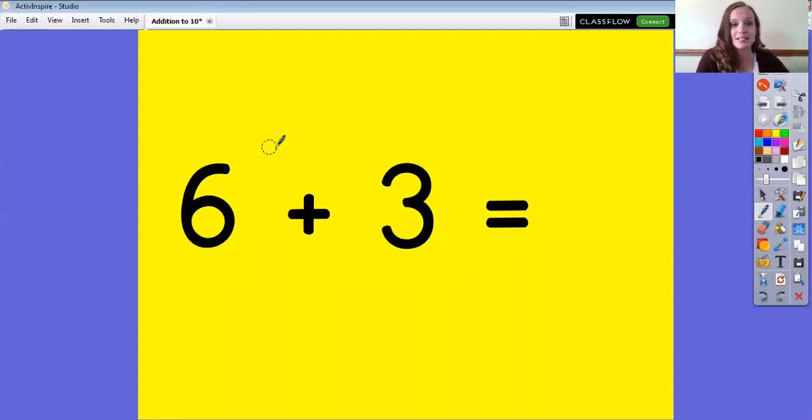Our next problem says 6 plus 3 equals. So when we're using our brain, let's put that bigger number first. It's just easier that way. 6 and let's count up 3 more numbers. 6, 7, 8, 9. Did you see how I counted up 3 more? The answer is 9. A circle plus a line. That's the way to make a 9. 6 plus 3 equals 9.